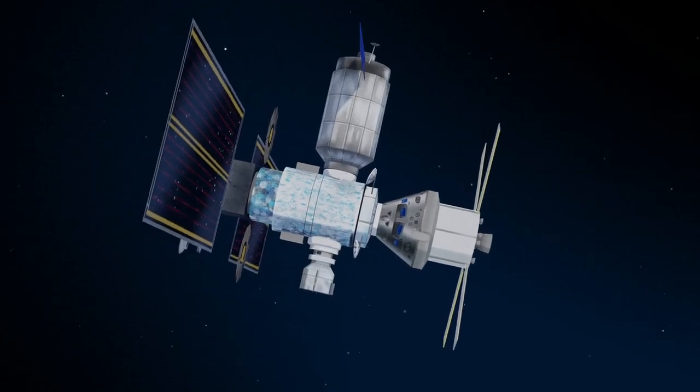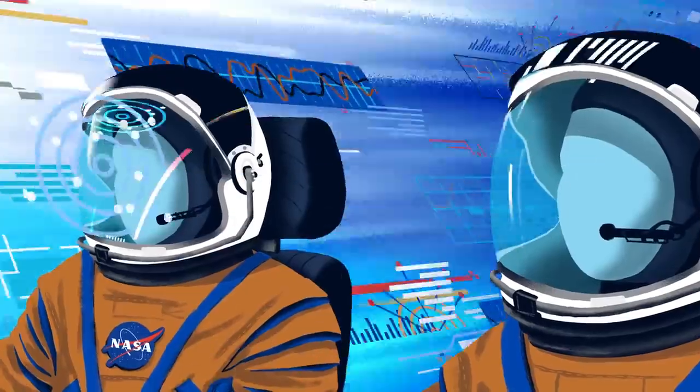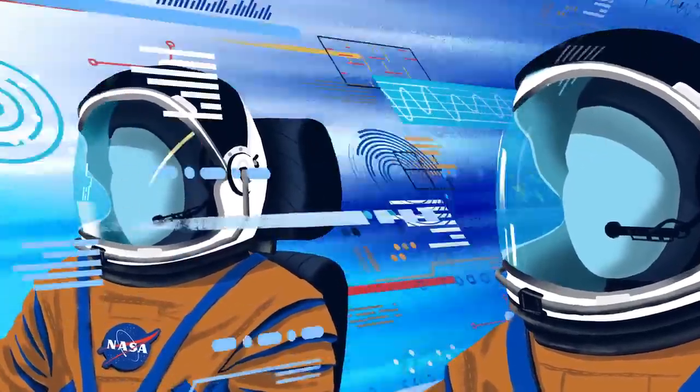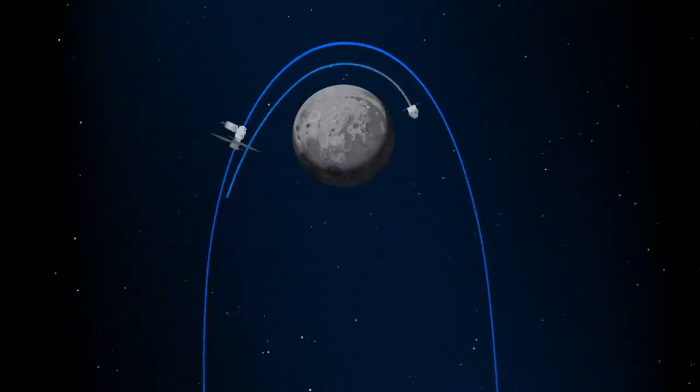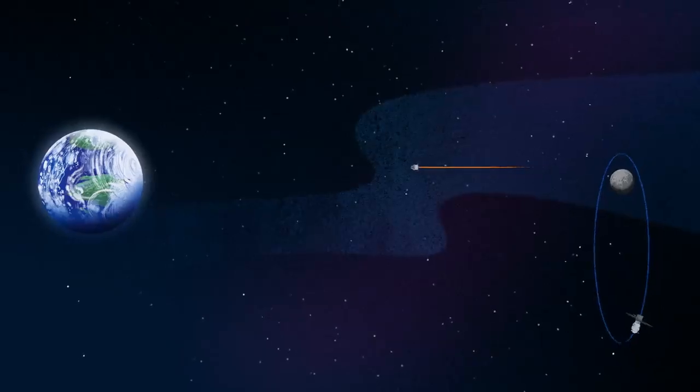Once back aboard the Orion spacecraft and undocked from Gateway, the crew fire their engine once to break out of the halo orbit, and once again to sling the spacecraft around the Moon, placing it on a multi-day trajectory back towards Earth.